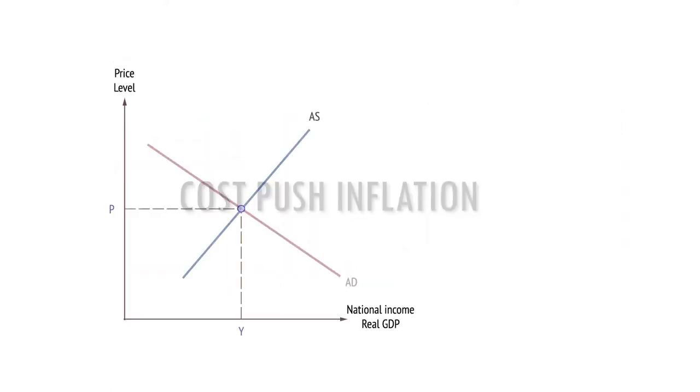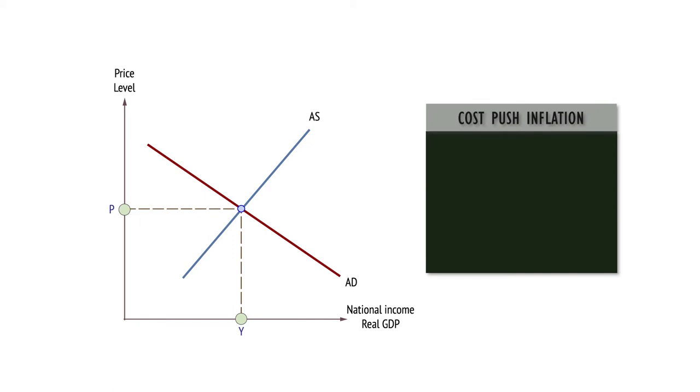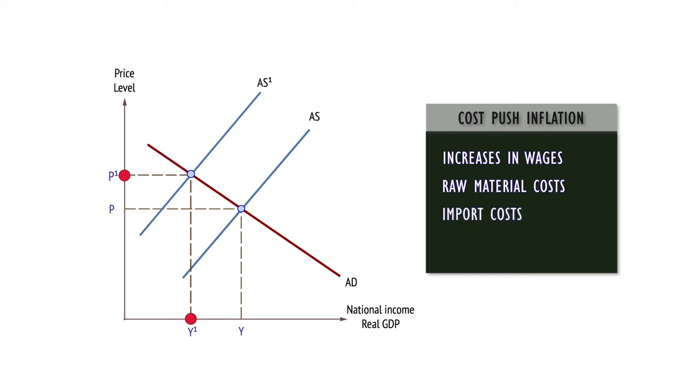Cost-push inflation can arise from many sources, including wages and raw materials and factor productivity, or from a rise in imported prices as a result of a weaker currency.